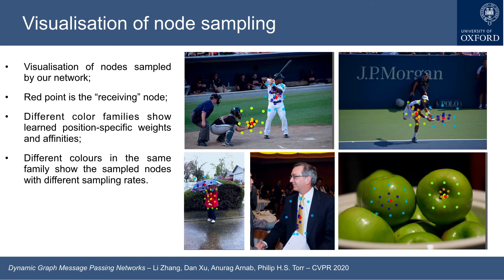Here we show the visualization of the nodes sampled while learning the random walks with our network. The examples are from COCO. The red point indicates a receiving node. Different color families, like yellow and blue, indicate the learned position-specific weight and affinity of the sampled nodes.